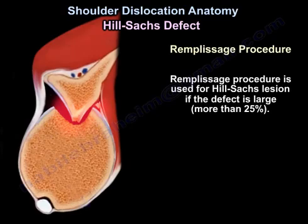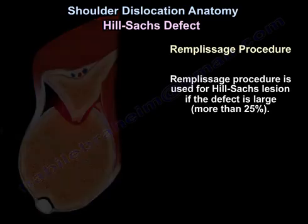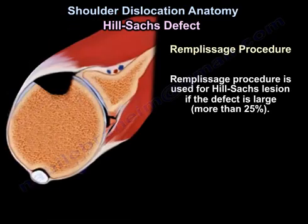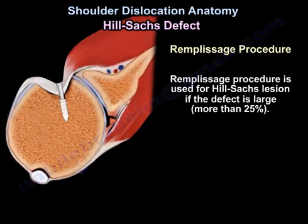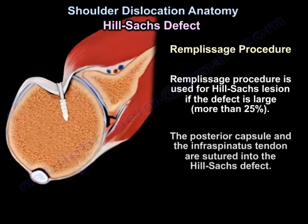The Remplissage procedure is used for Hill-Sachs lesion. If the defect is large — more than 25% — the posterior capsule and the infraspinatus tendon are sutured into the Hill-Sachs defect.